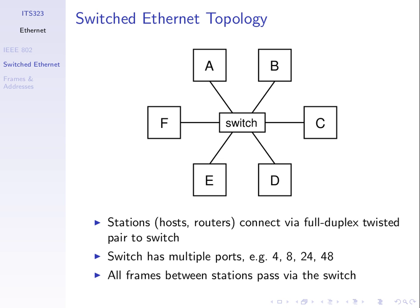Full-duplex twisted pair connects to the switch. The switch has multiple ports — four up to 48, for example. The more computers you want to connect via a switch, the larger and more expensive the switch. We transmit frames to the switch, and the switch does some processing and sends it on to the destination. So if A wants to transmit to D, A transmits across its link to the switch, and the switch looks at the frame and sends it on to D.